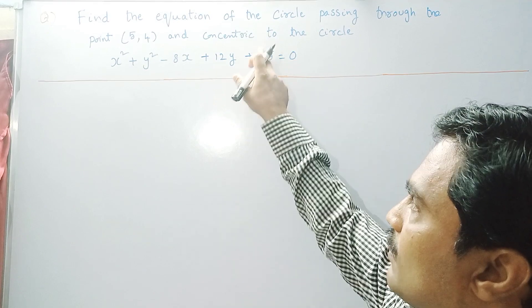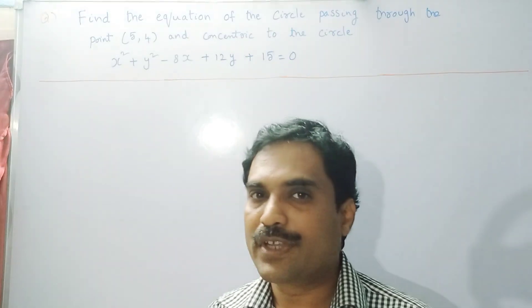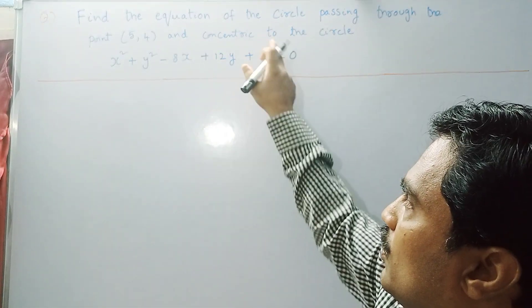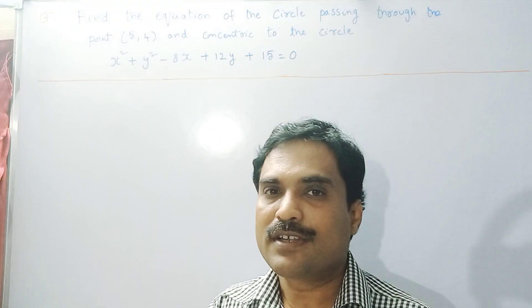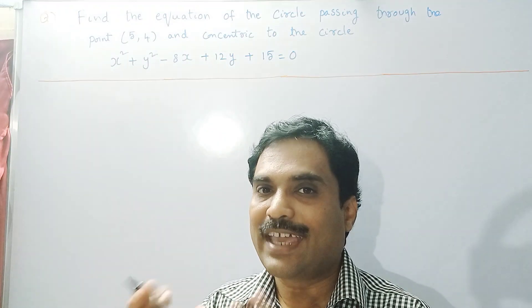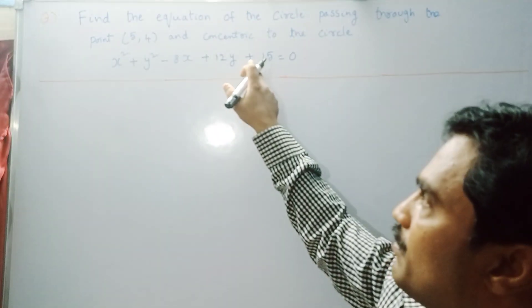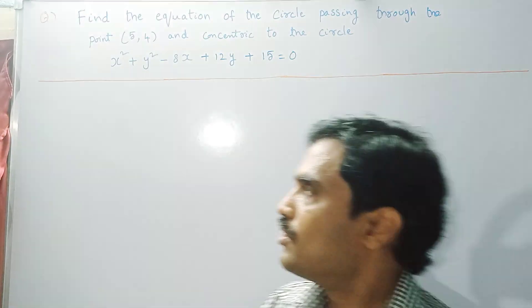In this equation, what is the constant term? The constant term is 15. So in place of 15, we need to put some different constant — we will put k. We will write the same equation but put plus k equal to 0.